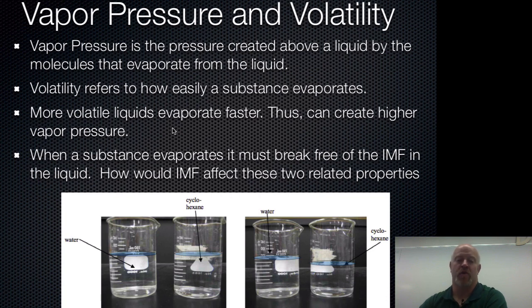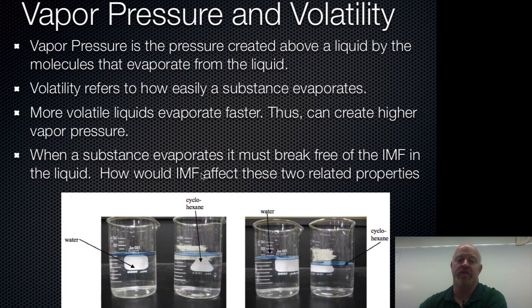Let's look at water again. Water is a very small molecule and should evaporate extremely fast at room temperature. However, it has very strong hydrogen bonds, so because of its strong intermolecular forces, water ends up having pretty low vapor pressure and pretty low volatility — it doesn't evaporate very well, just not very fast.